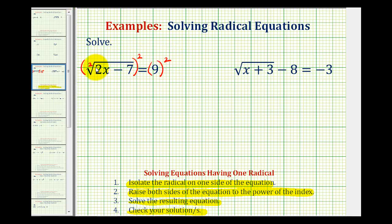When we square a square root, this will simplify to just the radicand, or 2x minus 7, and then on the right side, 9 squared is equal to 81.